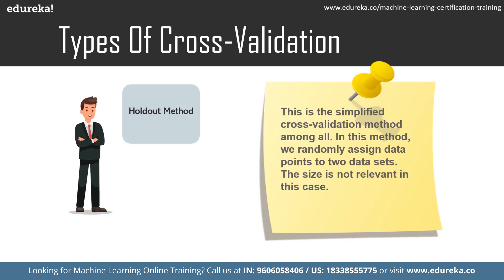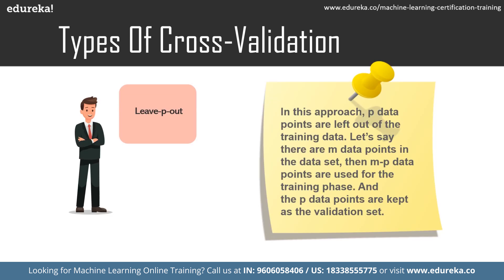Next is the holdout method. This is the simplified cross validation method where we randomly assign data points to two data sets — the size is not relevant. The basic idea is to remove a part from your training set and use it to get predictions from the model trained on the rest of the data. This method suffers from high variance since it takes only a single run, and it may also give misleading results.